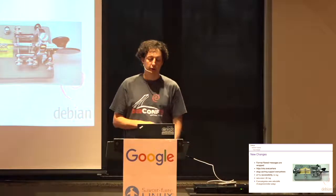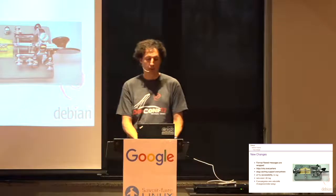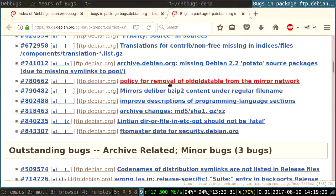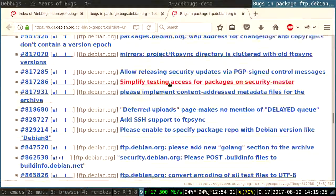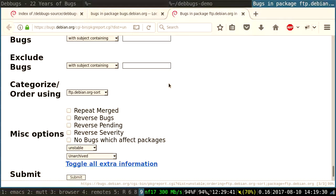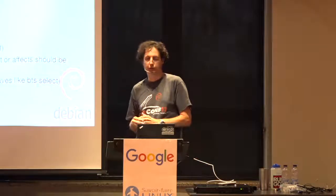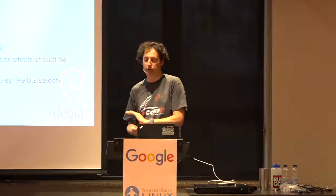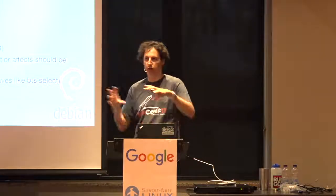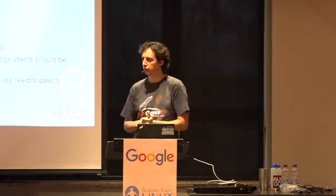One more thing I wanted to highlight is that user categories are now selectable. Way down here — this is bugs in FTP master — you can select all the categories. There's also some documentation for local dev bugs, which I'm going to show you in a second, and documentation about how versioning in multiple packages actually works in the BTS. If any of those sound interesting to you, feel free to jump in.